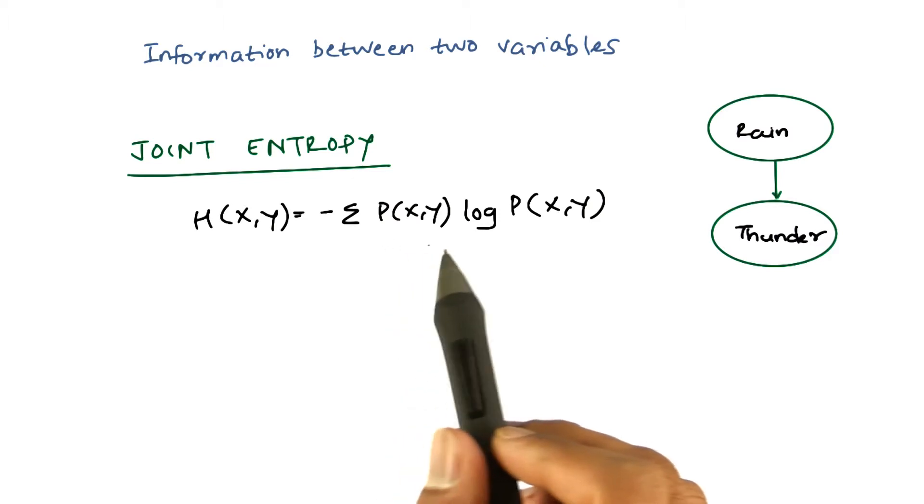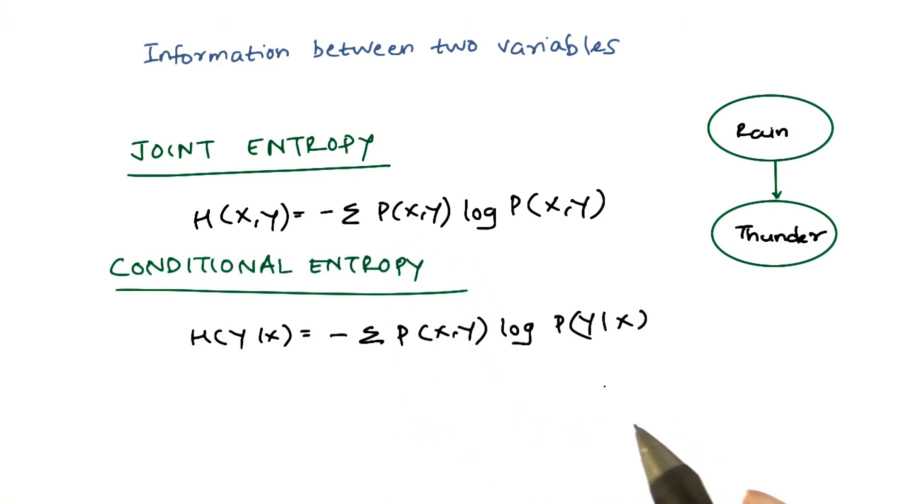Where p of x comma y is the joint probability of x and y. The other measure is called conditional entropy. Conditional entropy is a measure of the randomness of one variable given the other variable, and it is given by h of y given x. To understand these two concepts, you have to imagine what happens when x and y are independent.